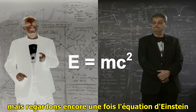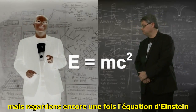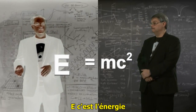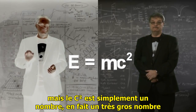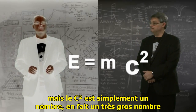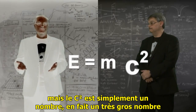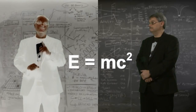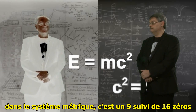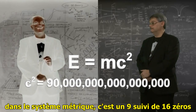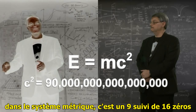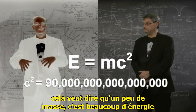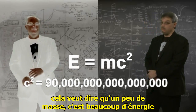Now let's take another look at Einstein's equation. E stands for energy, m stands for mass, but the c squared term is just a number — actually a very big number. In the usual metric system it is a 9 followed by 16 zeros. This means a little mass is a lot of energy.